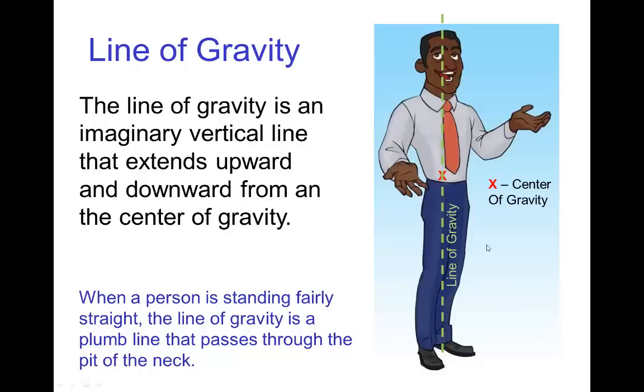The line of gravity for this character standing fairly straight, well if the center of gravity is located roughly here, then the line of gravity goes up and down. So you see it would travel somewhat through the center of the head, down the center of the body, so on down.